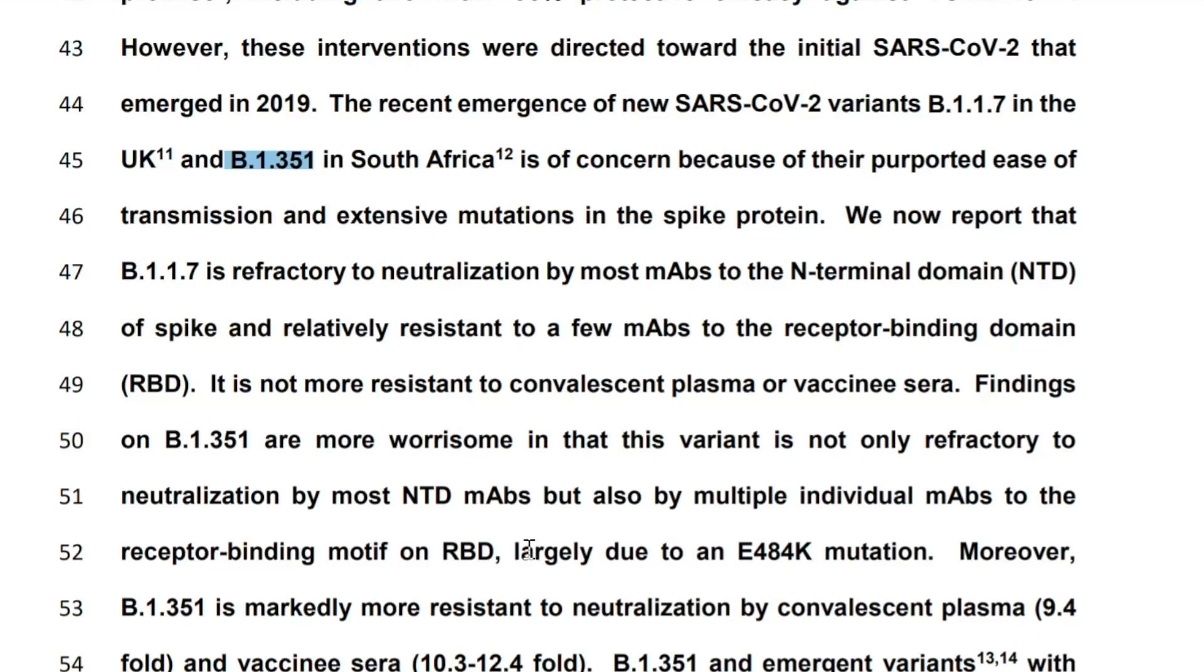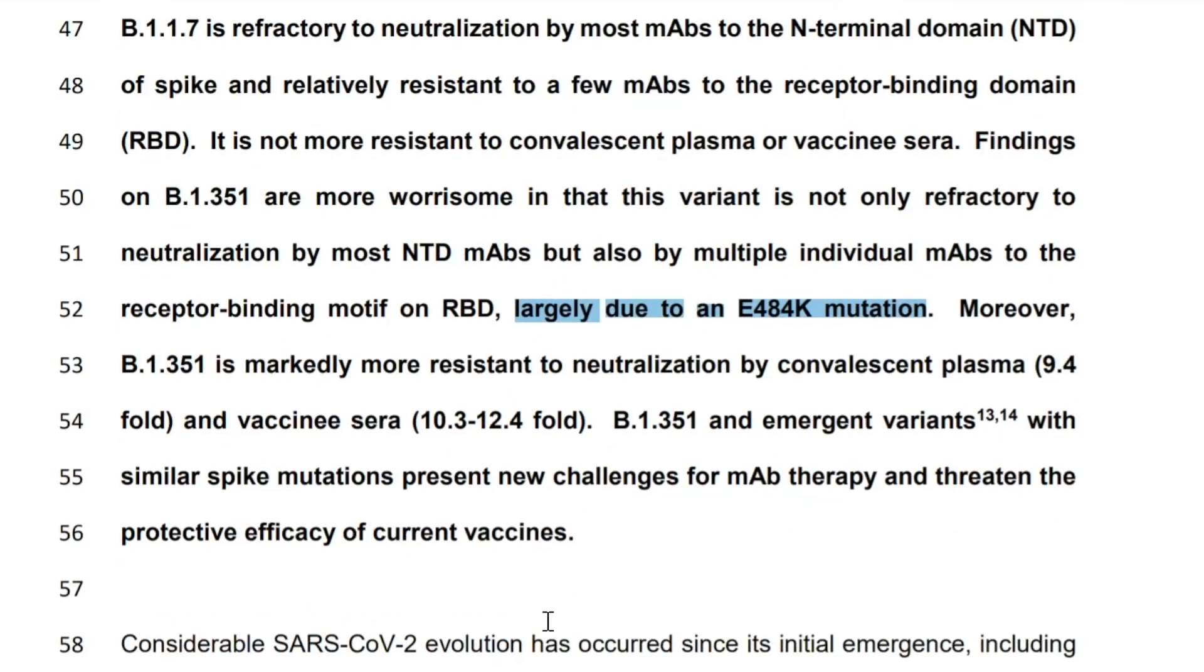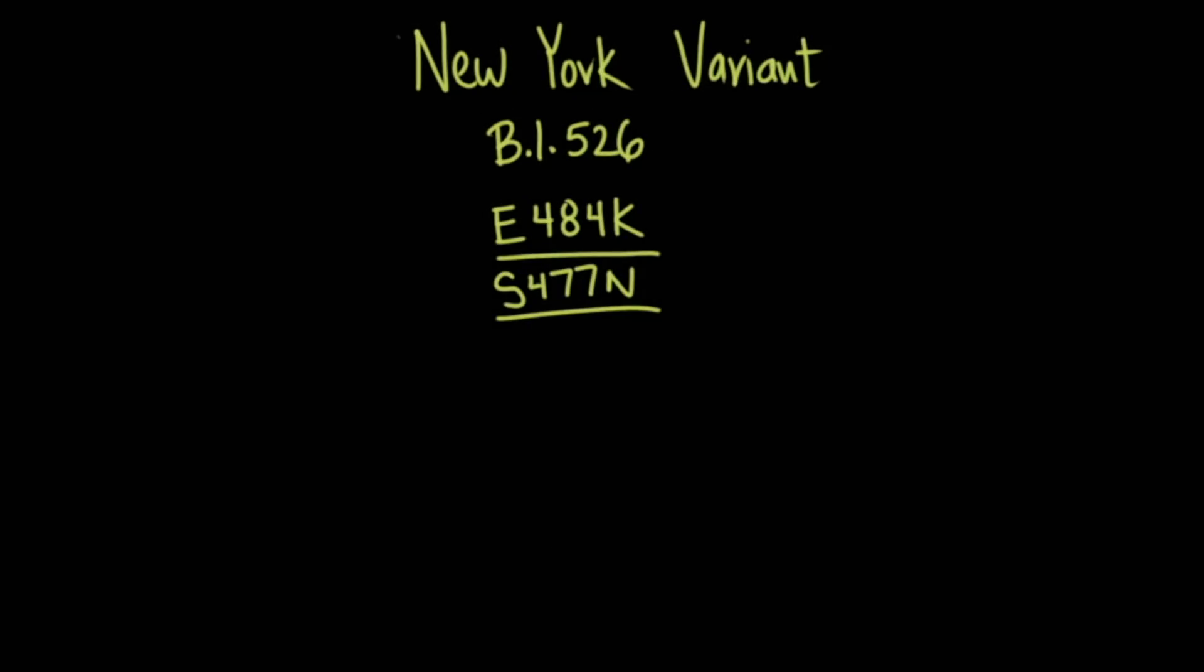As you can see, it is probably largely due to the E484K mutation that there were some challenges there in terms of monoclonal antibody therapy. And again, that's exactly the mutation that we're seeing here in the New York variant as well.